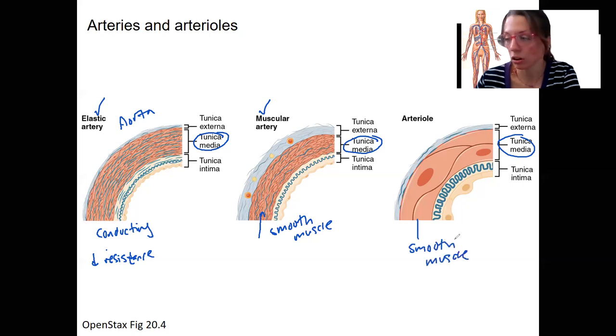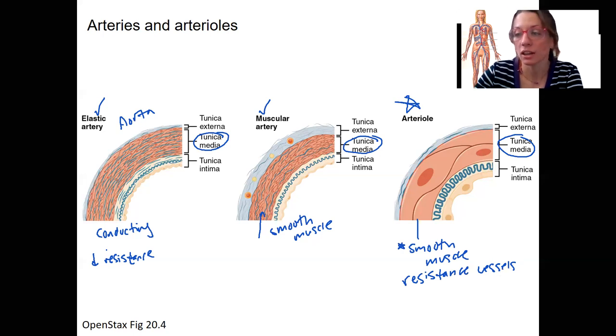They're thinner overall. Again, there's variability in the thickness of all of these. Most important is this is the place where diameter changes the most, so this smooth muscle is super important here as well. But these ones are so important they're called resistance vessels. They can increase resistance or decrease resistance in order to regulate blood pressure. Let's look at doing this.